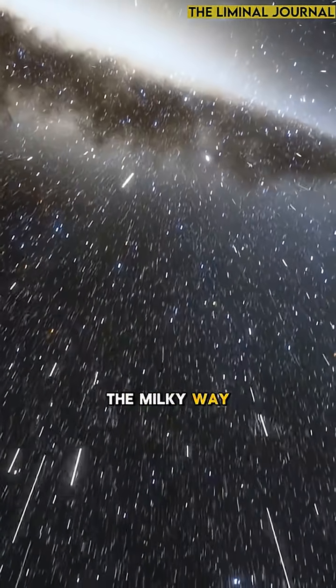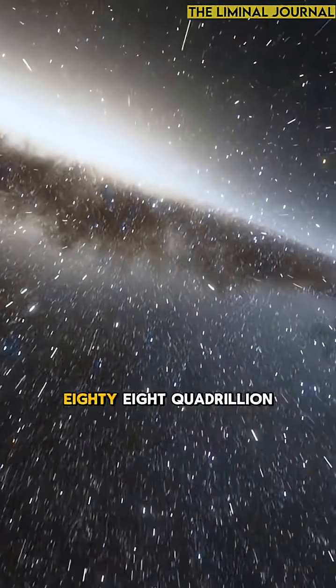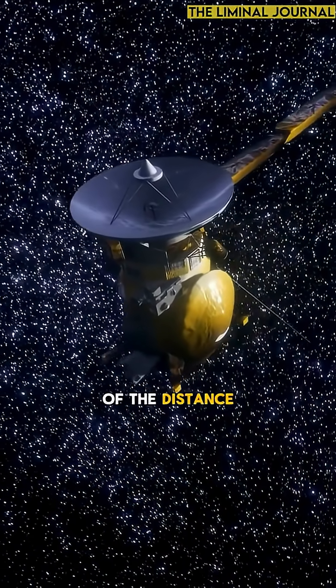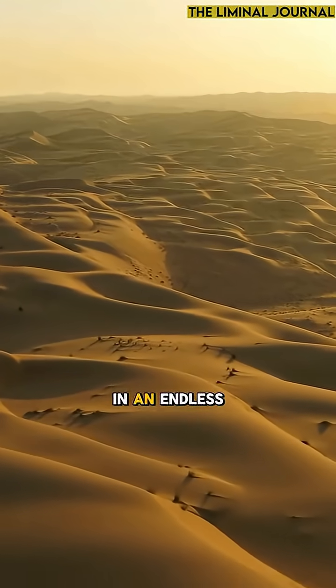But in comparison, the Milky Way galaxy is a staggering 588 quadrillion miles wide. That means Voyager 1 has only covered a tiny fraction of the distance, like a single grain of sand in an endless desert.